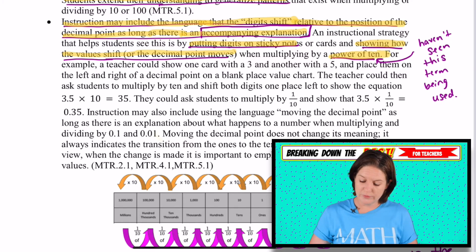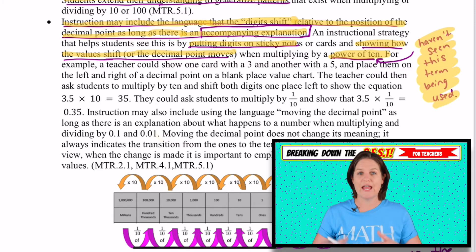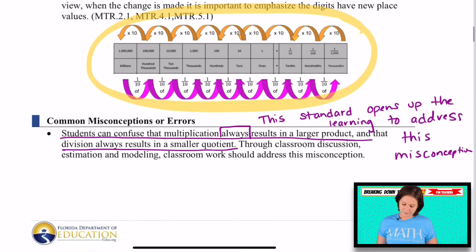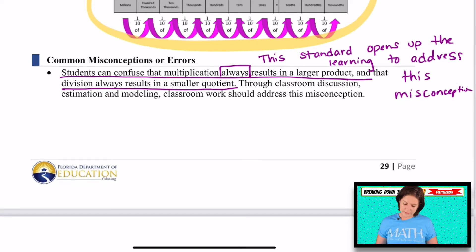As long as we are explaining what's happening, why they are shifting, how they're getting 10 times greater or 10 times less. Sticky notes, putting digits on sticky notes to show that they mentioned that there. That's a good strategy to use and showing how the value shift or the decimal point moves. So here they do mention the word power of 10, but I haven't seen this term being used in any of the examples. So even though we are multiplying and dividing by one tenth and one hundredth, I haven't seen it used as a power of 10 anywhere on here. Of course, a place value chart like this would be helpful to show them what's happening when we increase the value or decrease the value. And here, it says that students can confuse that multiplication always results in a larger product and that division always results in a smaller product. That's where they're coming from in third grade and fourth grade, right? Usually when they multiply, they realize it's a large number. And when they divide, the quotient is smaller. And in fifth grade, we're opening up the conversation. This standard opens up the learning to address this misconception.